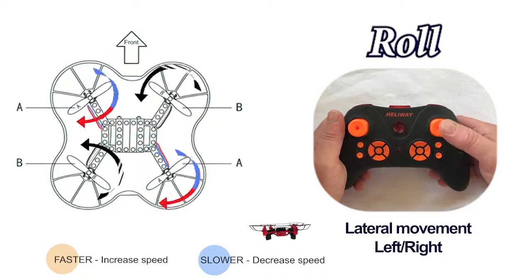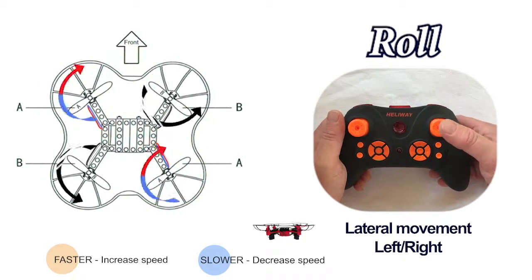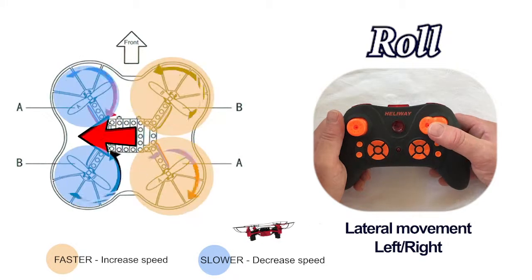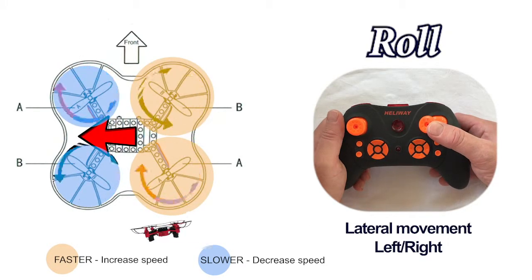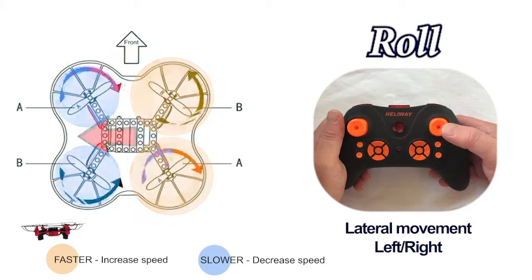Pushing the stick to the left or the right will cause the craft to what we call roll. Push left, the B and A propellers on the right-hand side speed up and the drone heads left.